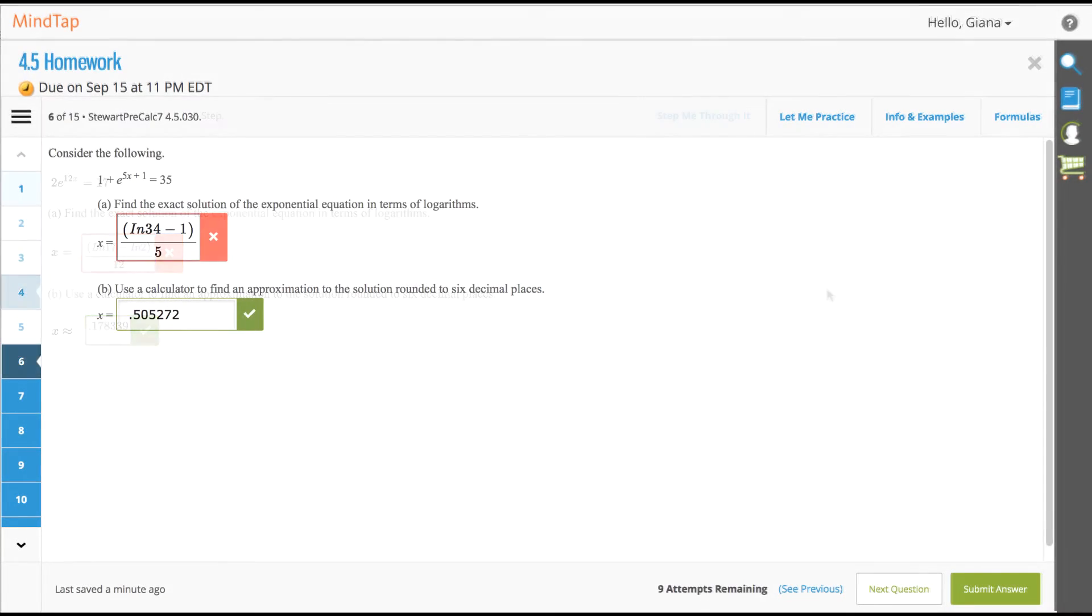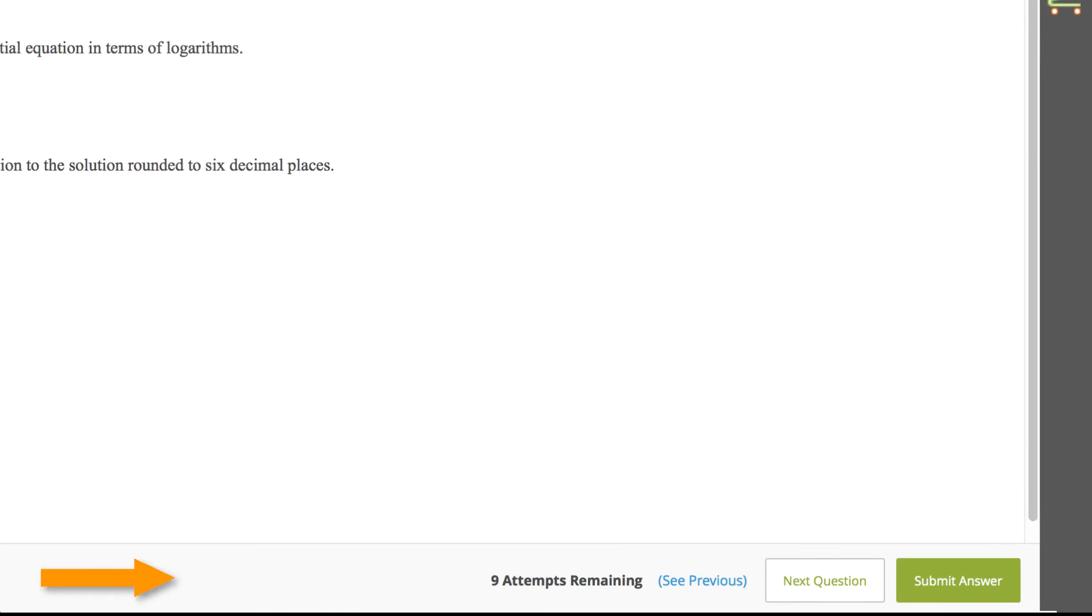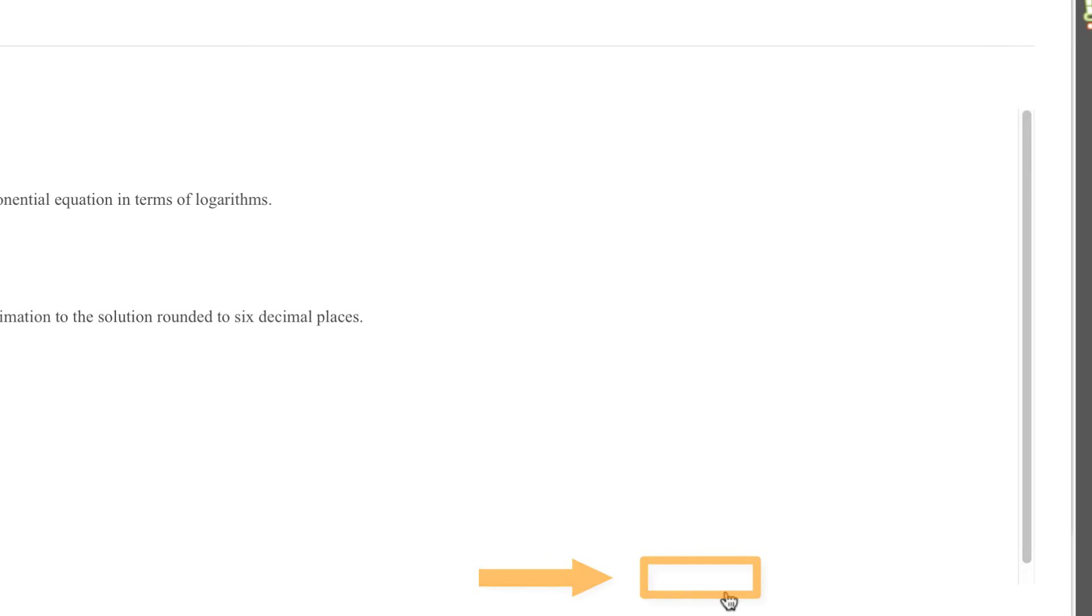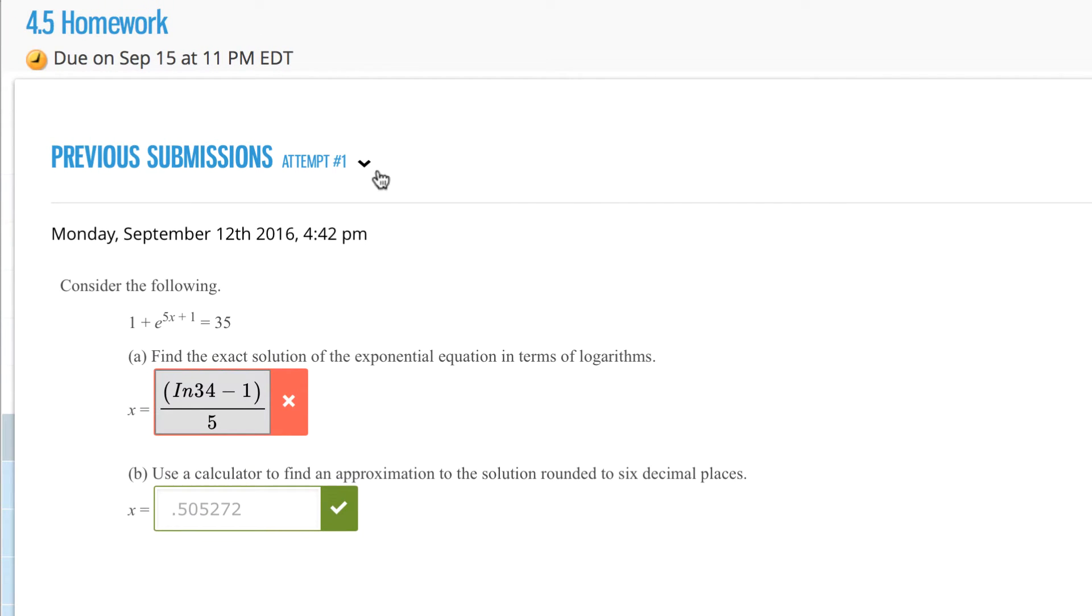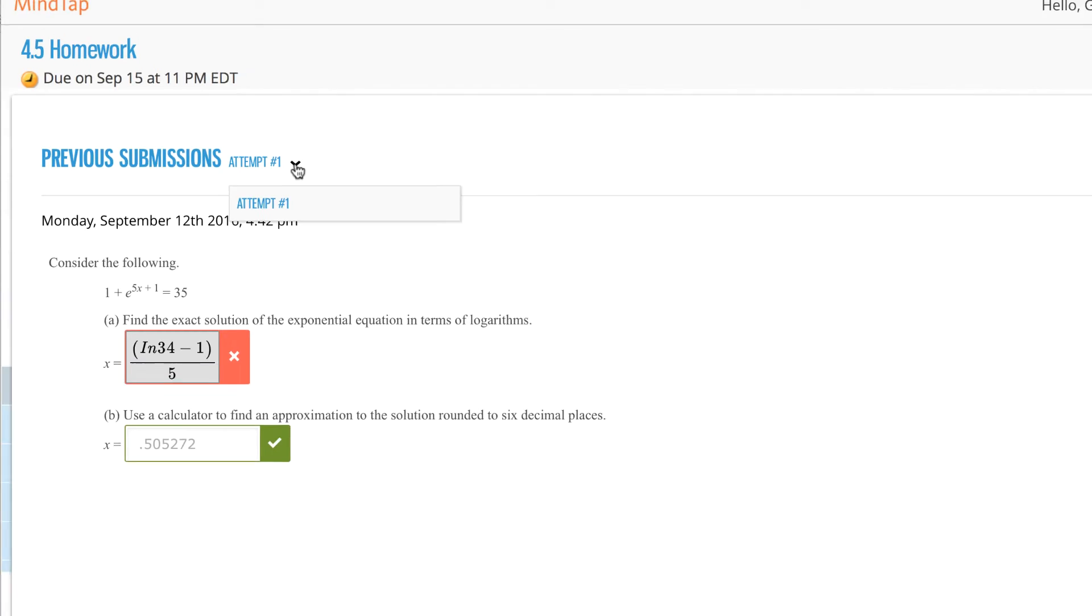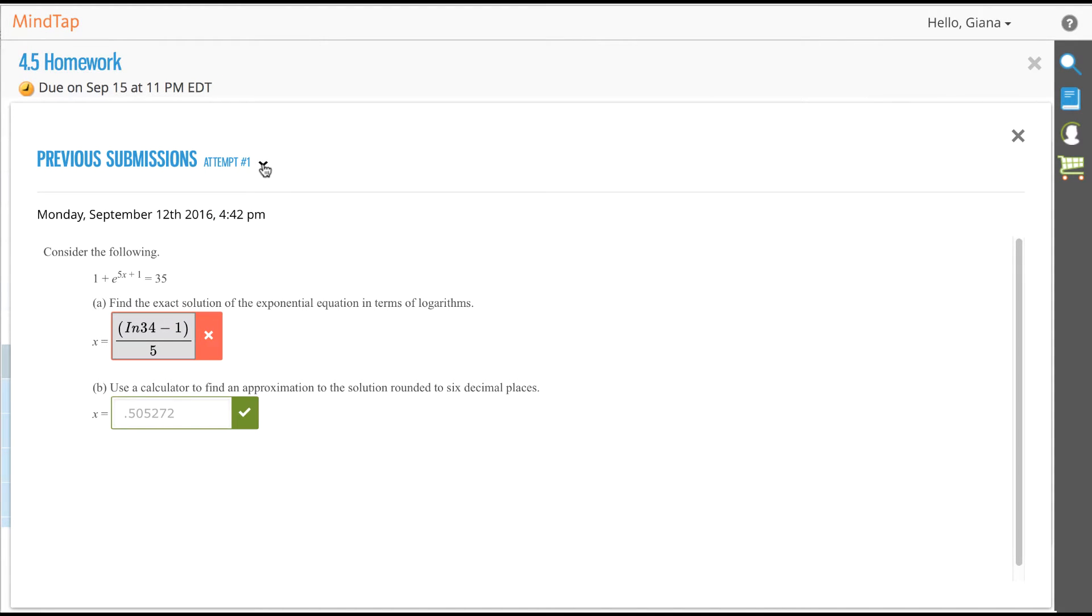After an incorrect attempt on a homework problem, you are able to click See Previous to check which answers you've submitted. MindTap automatically saves your work, capturing every submission and attempt as you progress through the assignment.